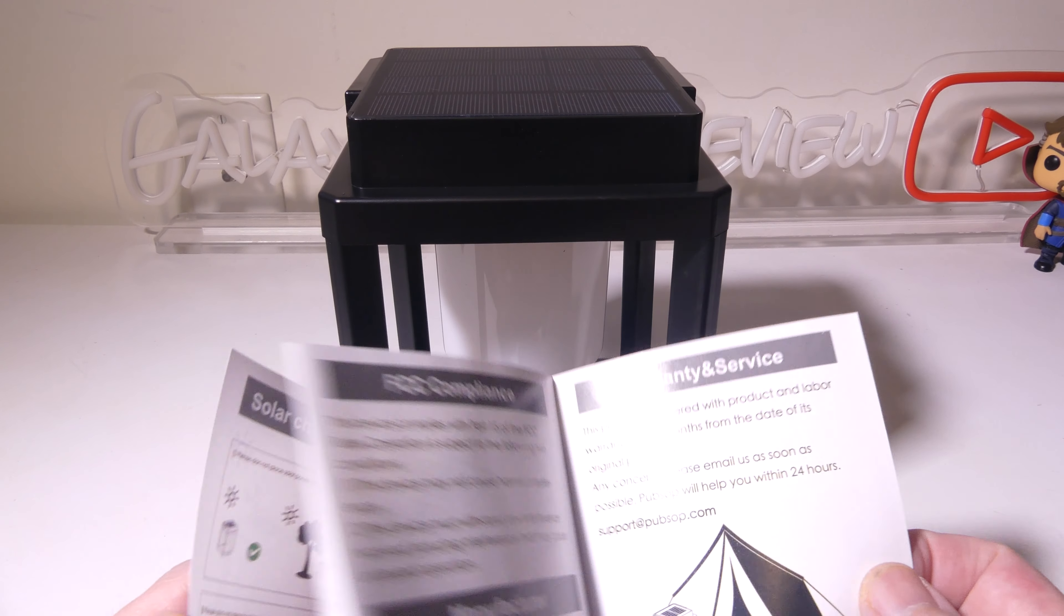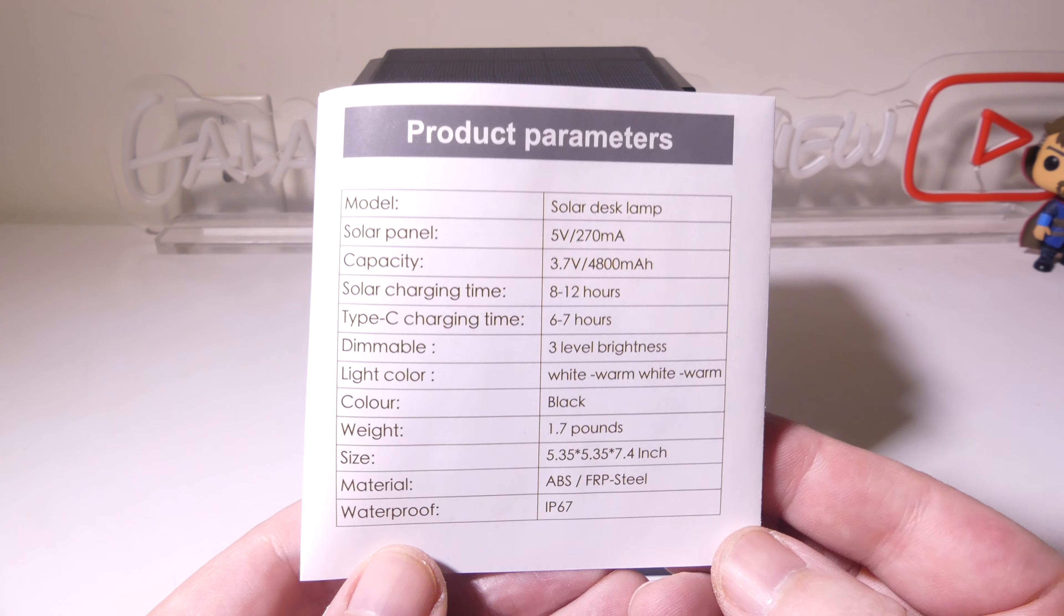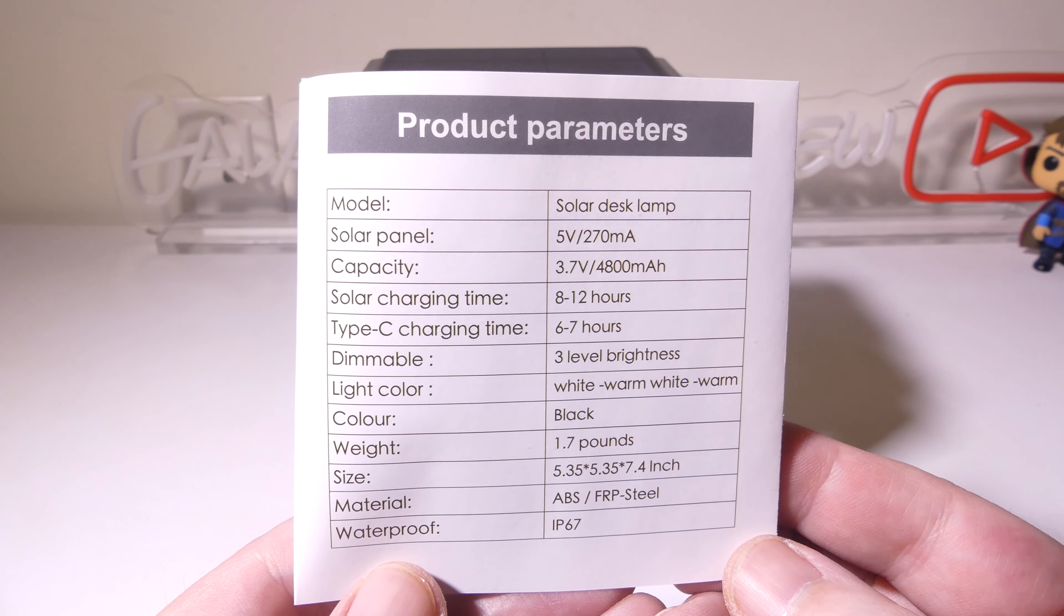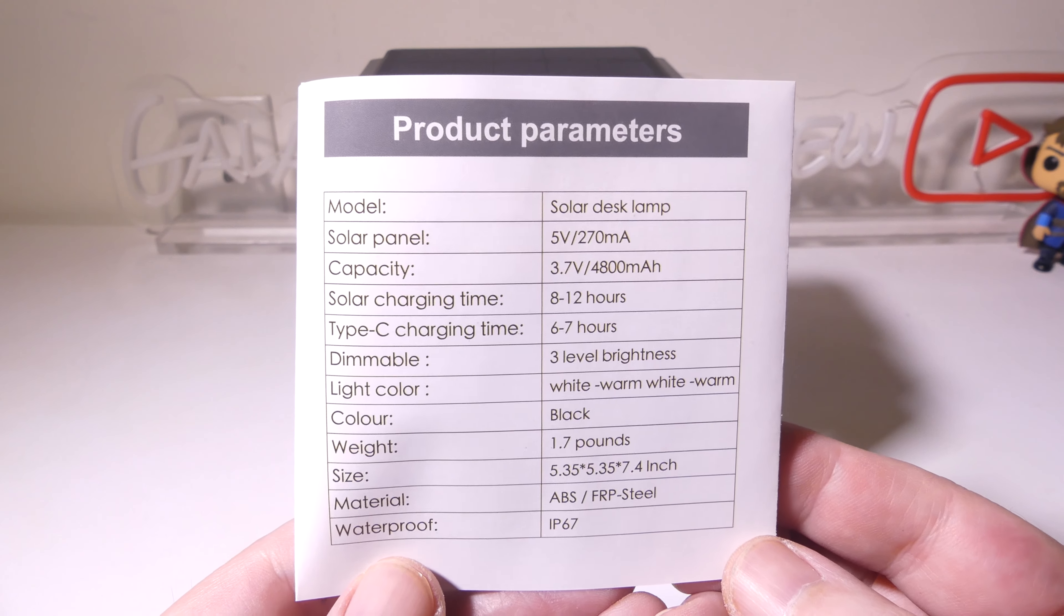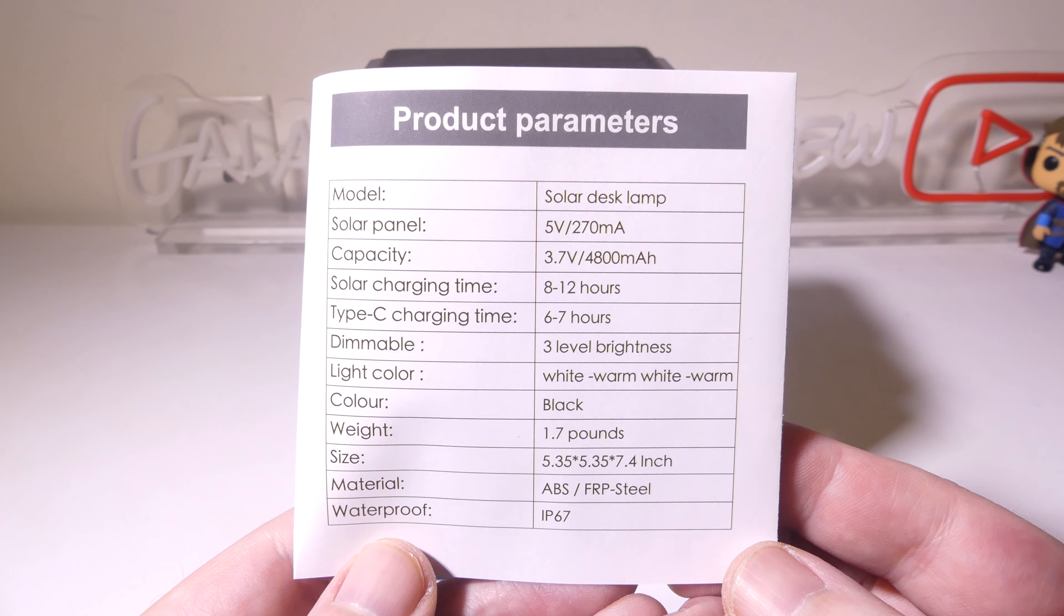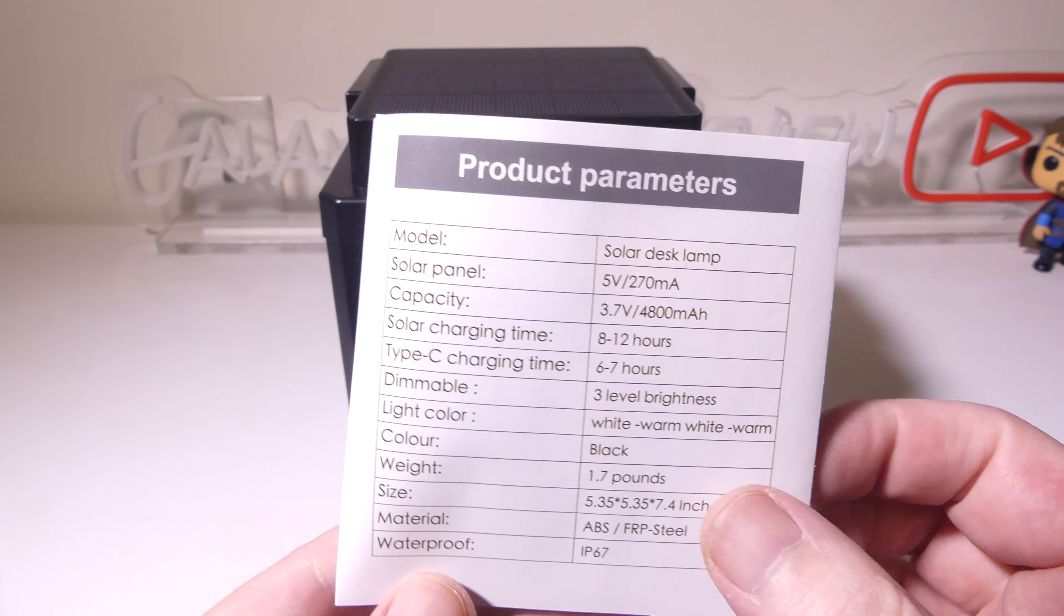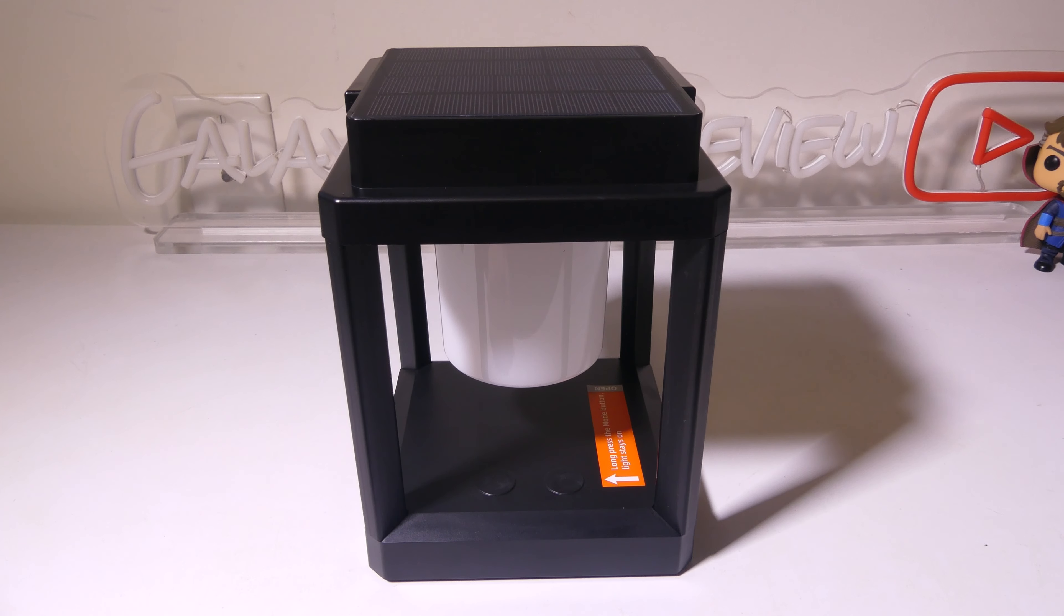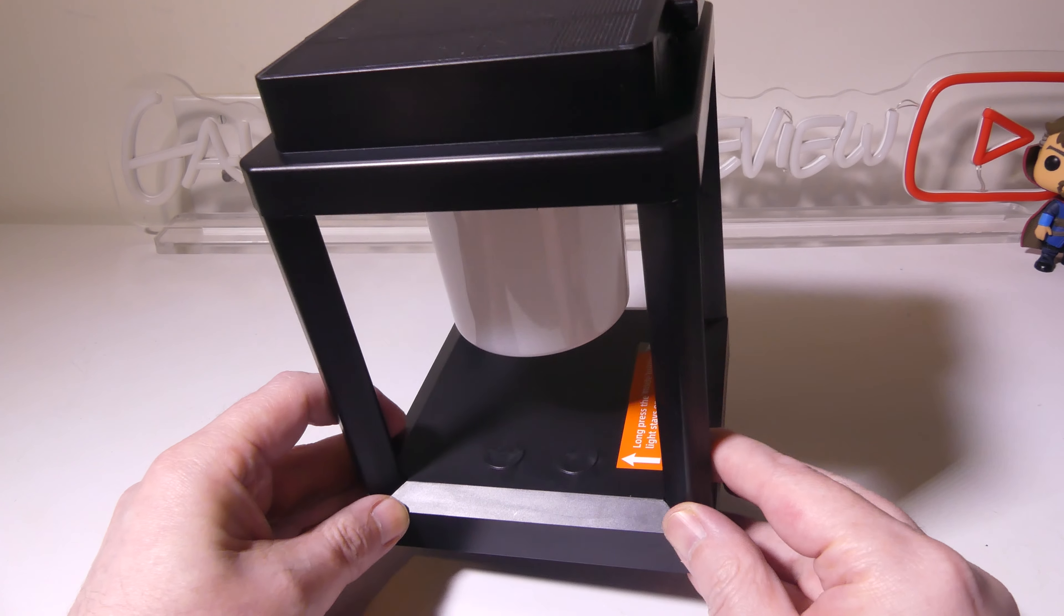Now, this also has some product parameters here. You can see that it takes 8 to 12 hours to charge it via solar, and that's to fully charge it, and 6 to 7 hours via USB Type-C. There's three levels of brightness, and there's three different color temperatures on this as well. It is IP67 waterproofed, so I'll have those up at this point in the video. If I miss anything, you can come and check it out.